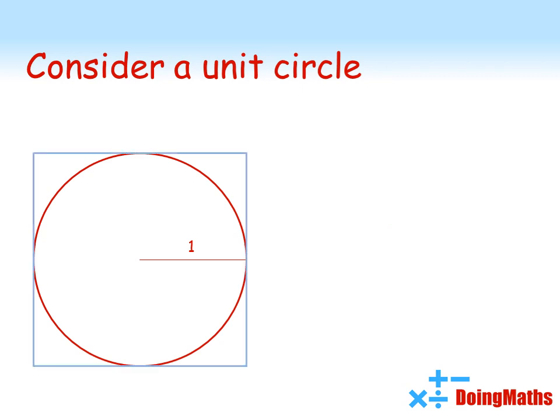Consider this square around the edge of the circle. It is as wide as the circle is. So if the radius of the circle is 1, each side of the square must be 2. So the area of this square is 2 times 2, which is equal to 4.